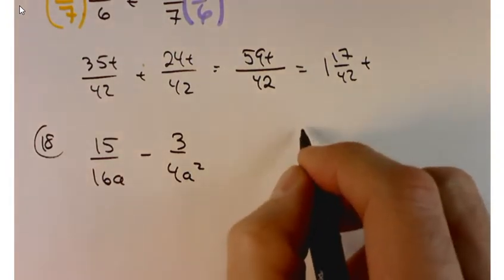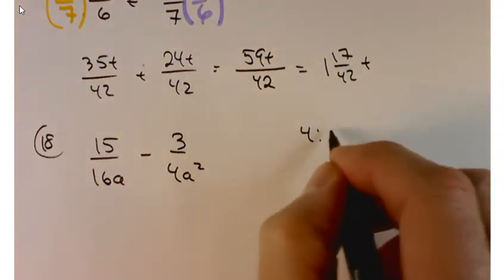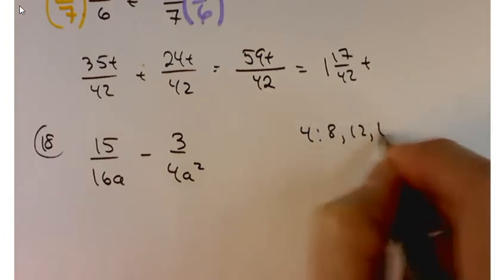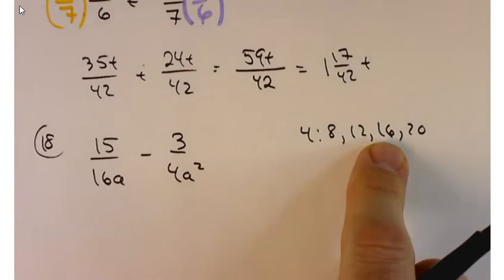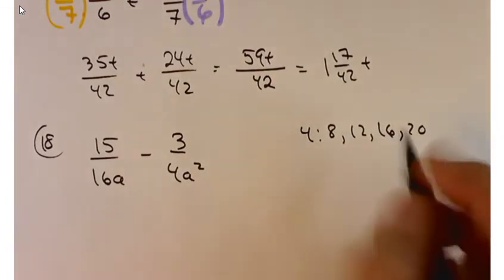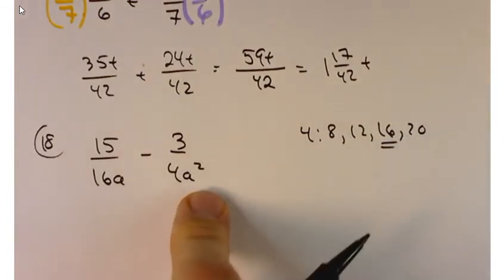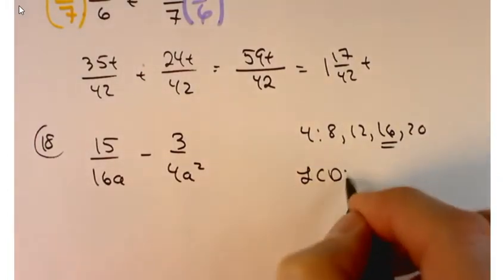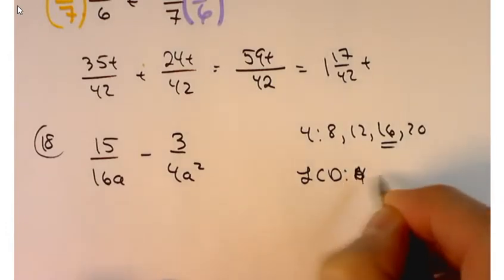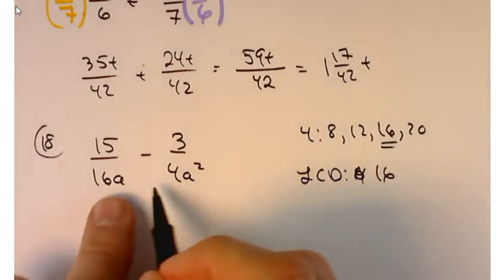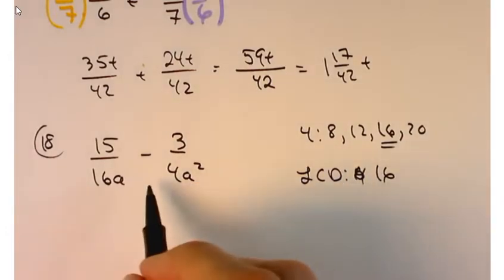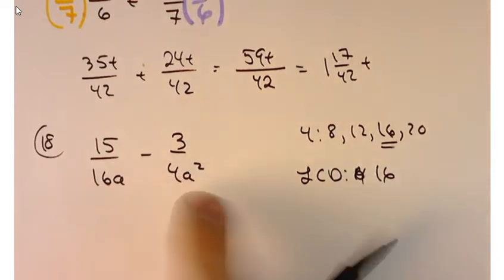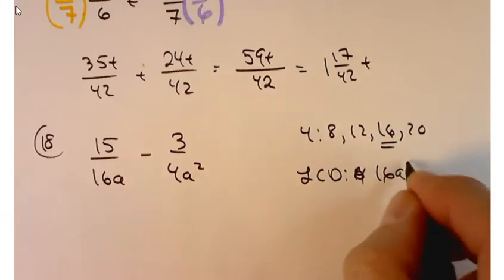Let's do the numeric part first. Multiples of 4 are 4, 8, 12, 16 — and at 16 you can stop because 16 is going to be part of your LCD. For the variable part, you look at the variables and pick the highest power. Don't add the exponents — don't do 1 plus 2 equals 3. I want 16a squared.